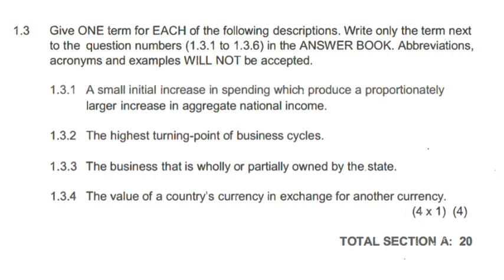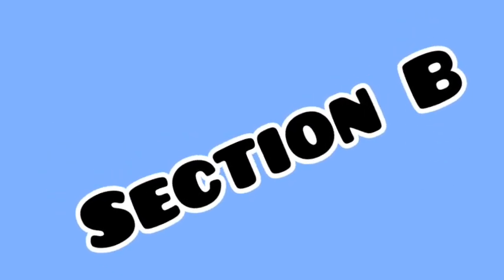The last format in question one is where you read a description and give a term — it's a question of concepts and terms. Are you able to identify what term relates to what has been described? For example, you write next to 1.3.1 the term for 'a small initial increase in spending which produces a proportionately larger increase in aggregate national income.' You simply write the term next to the description.